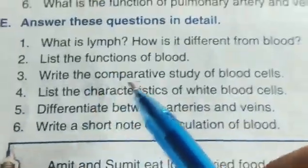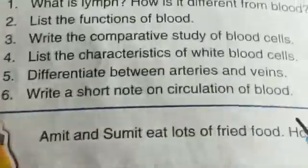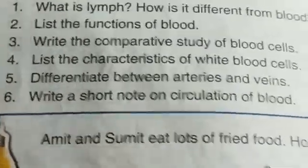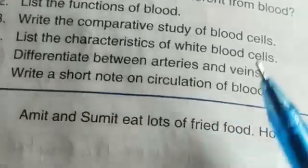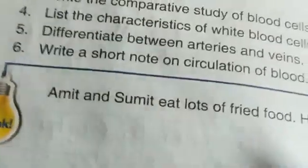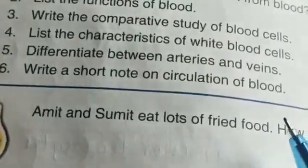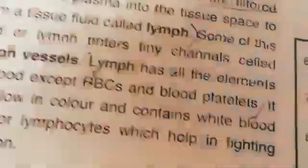Third question: write the comparative study of the blood cells. You have to draw the table given on page number five. Then list the characteristics of white blood cells — again you have to write from that table.